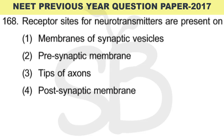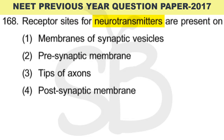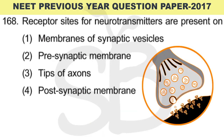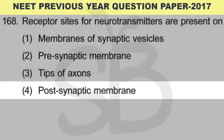Question number 168: Receptor sites for neurotransmitters — where are they located? This is discussed in Plus 1 Biology, chapter Neural Control and Coordination, page 390. Neurotransmitters are produced in the pre-synaptic membrane, and receptors are present on the post-synaptic membrane. The correct answer is option 4: post-synaptic membrane. This diagram is important to remember.